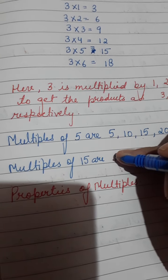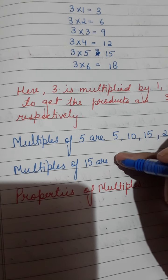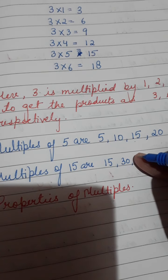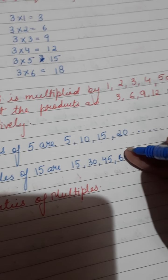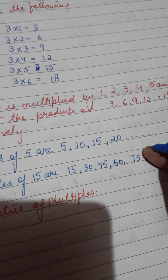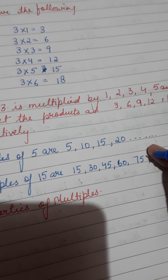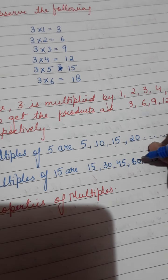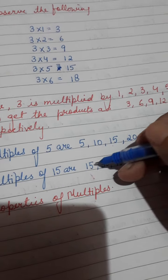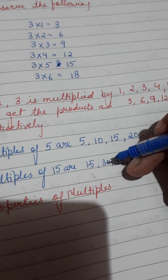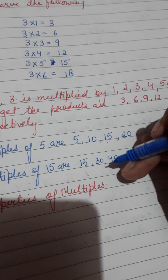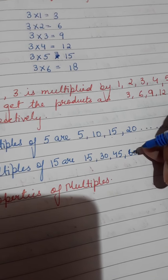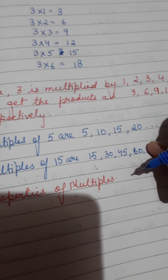If I say write the first four multiples of 15, you will multiply 15 four times starting from 1: 15×1=15, 15×2=30, 15×3=45, 15×4=60. You will not write 75, because I asked for the first four multiples only. First is 15, second is 30, third is 45, and the last is 60.